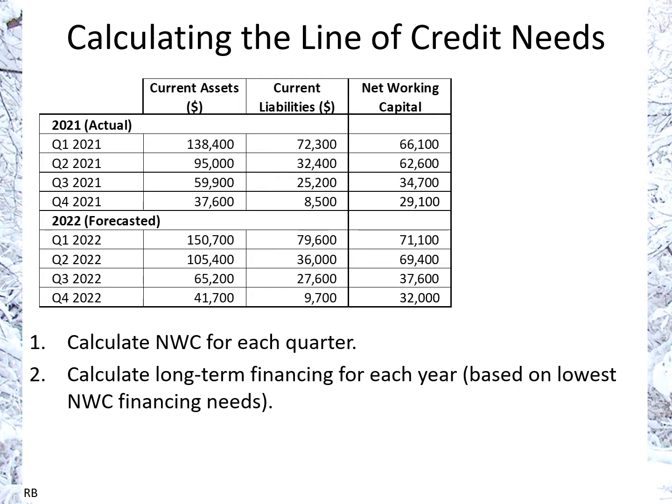Secondly, we're going to calculate the long-term financing for each year based on the lowest net working capital financing needs in the year. At the lowest point — where we need the least amount of net working capital — we can consider that the permanent requirement, so that can be financed with long-term capital. Those two numbers are $29,100 for 2021 and the forecast of $32,000 for 2022.